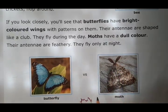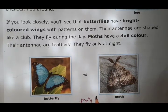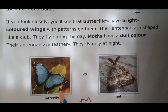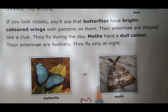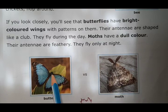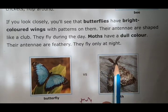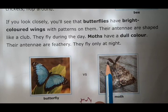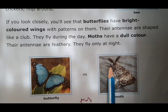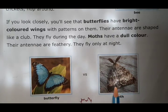So this is the difference between butterfly and moth — three comparisons. First, the butterfly has beautifully colored wings and moth has dull color. Second, the antenna of butterfly is like a club and the antenna of moth is like feathers. Third, butterfly flies during the day and moth flies at night.